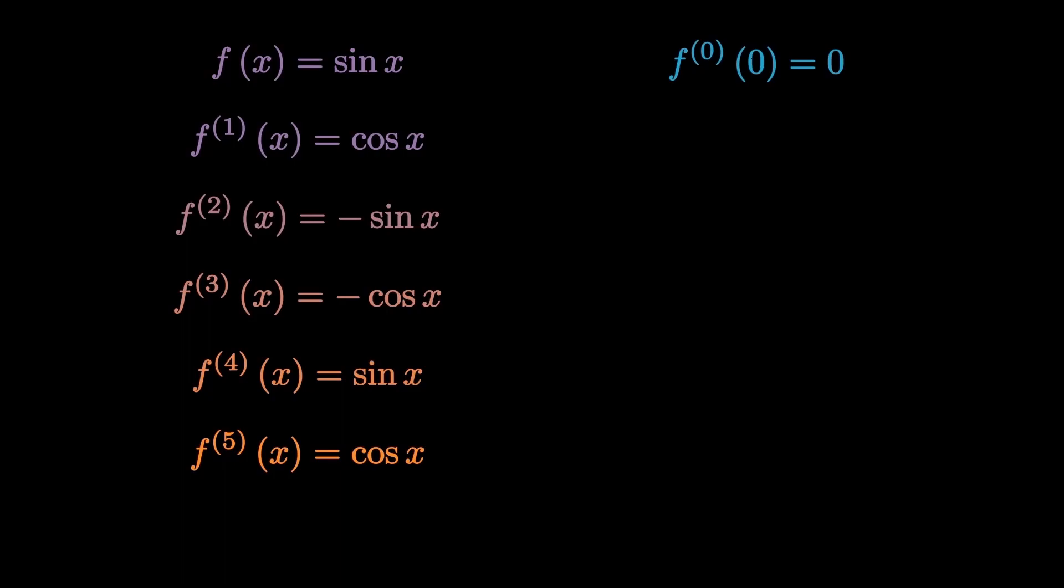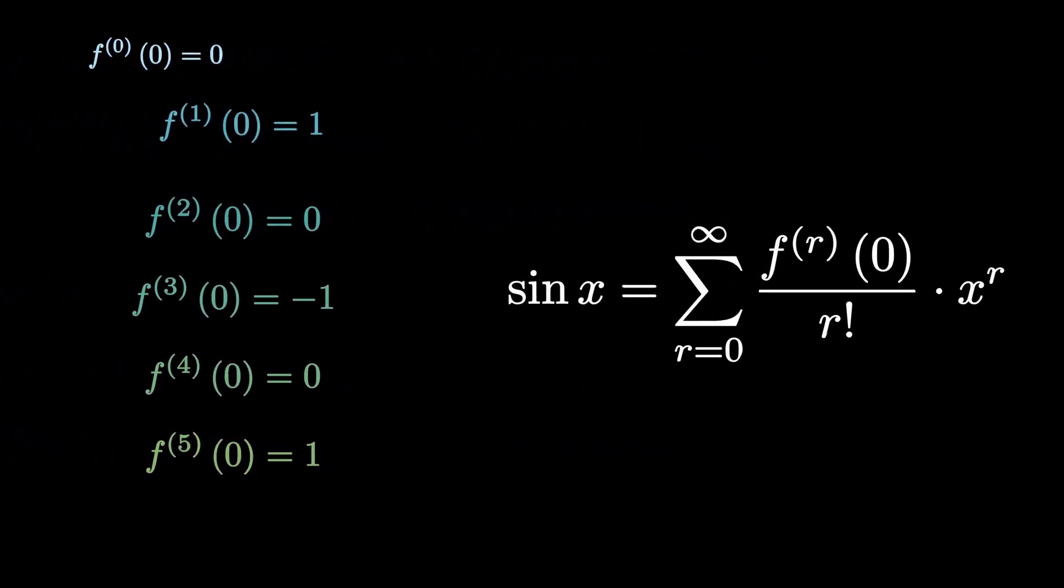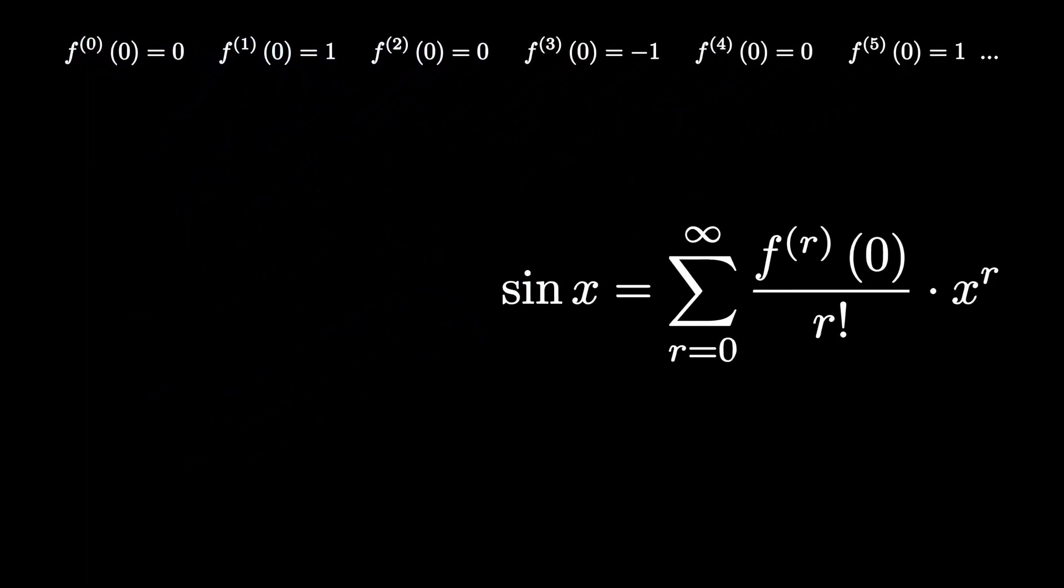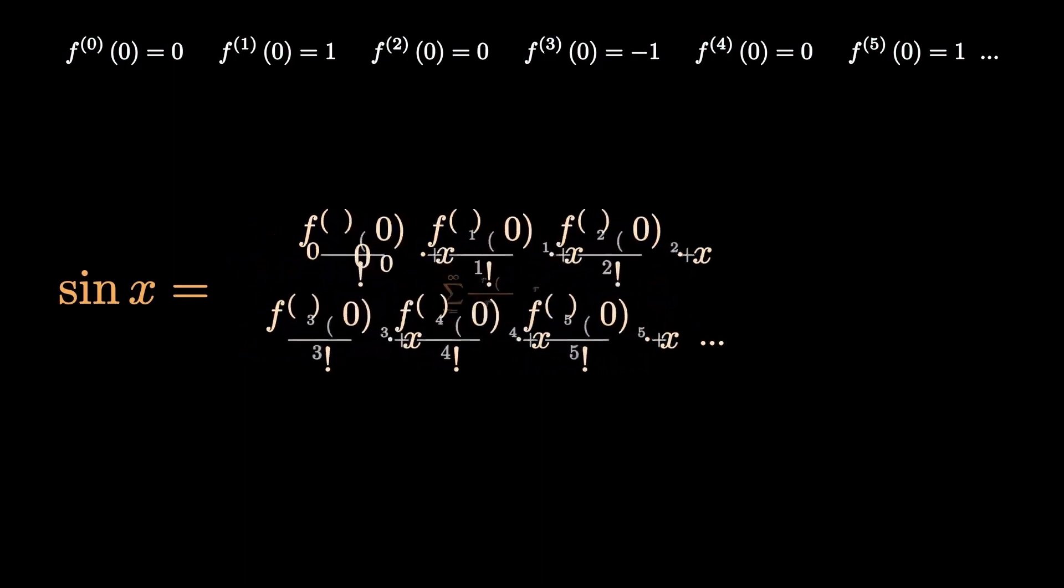Routinely, the next step is to find each of these derivatives at x equals 0. After that, let's rewrite the Maclaurin definition for sin x as always. Let's rewrite the right hand side in a more tangible form.